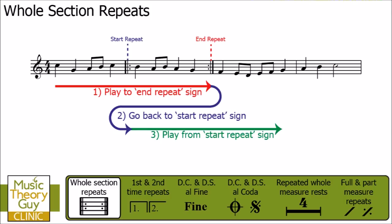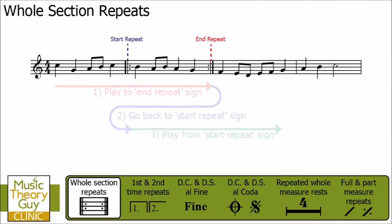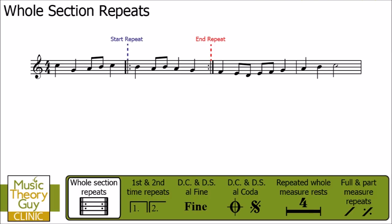In the example you've just heard, the start repeat sign and the end repeat sign are only a bar or a measure apart from each other. Be aware that sometimes in music there might be several bars or measures, or even many, many bars or measures between them. So always keep an eye out for the start and end repeat signs.